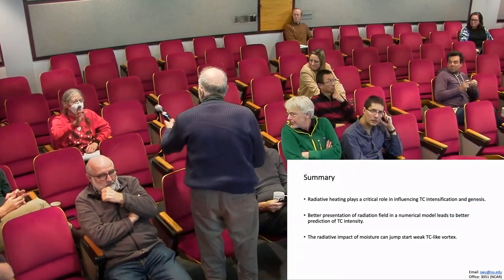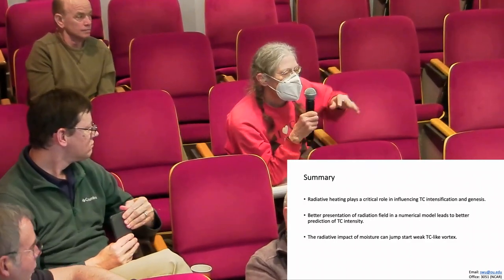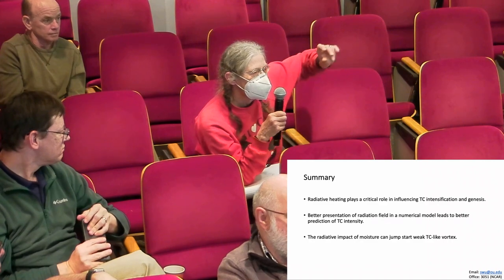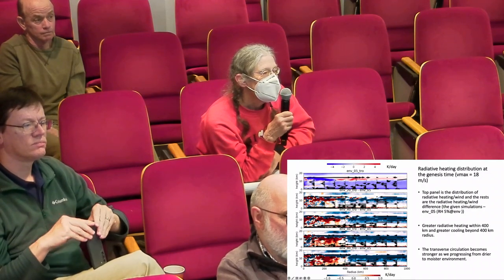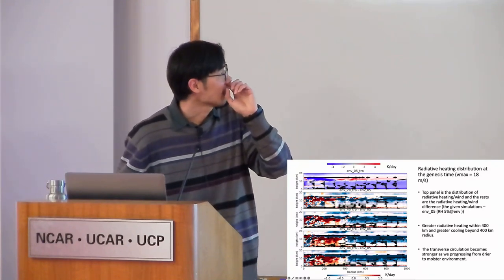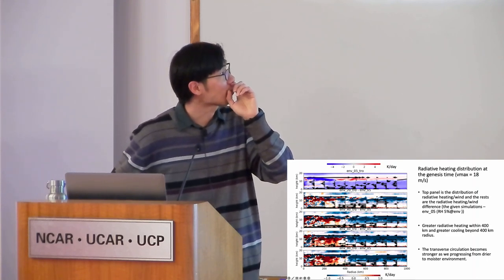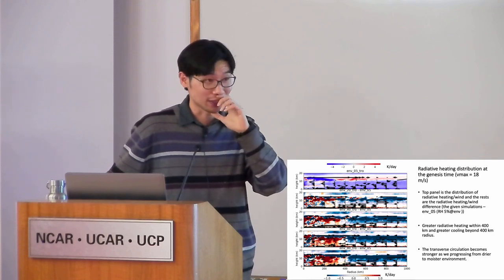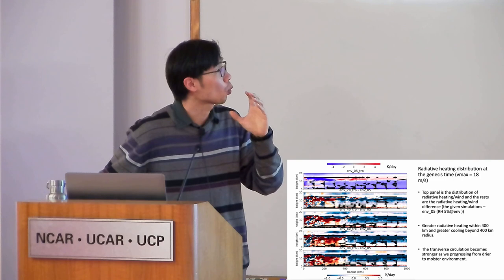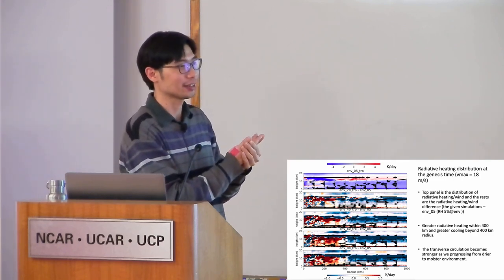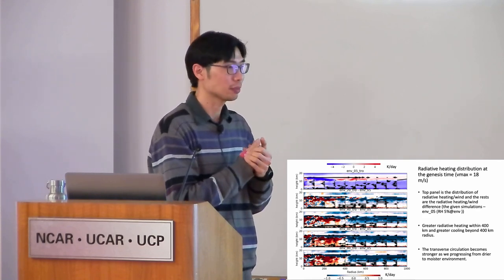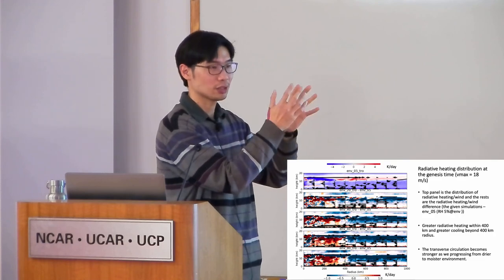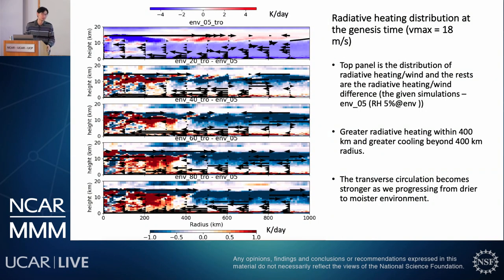An audience member asks for clarification about the depth of net heating referenced — noting strong cooling above the hurricane and strong heating within the clouds. The speaker clarifies that in the atmosphere radiative forcing is mostly cooling, so what they refer to is relative radiative heating, and they specifically refer to levels below 10 kilometers, where the warm core of the TC usually occurs and where radiative heating is most beneficial for TC development.